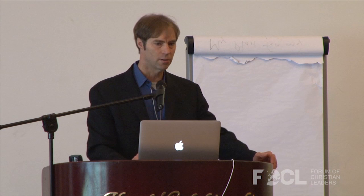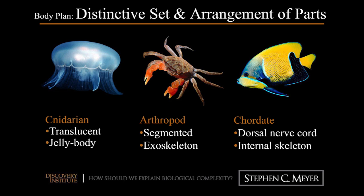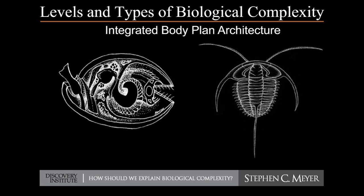When we're talking about biological complexity, we could be talking about a lot of different things. We could be talking about, for example, the distinctive arrangement of organs and tissues that constitute what biologists call animal body plans. I'm particularly interested in this right now — I've written a book on the Cambrian Explosion. A body plan is an integrated structure involving many disparate parts that fit together into a functional whole.